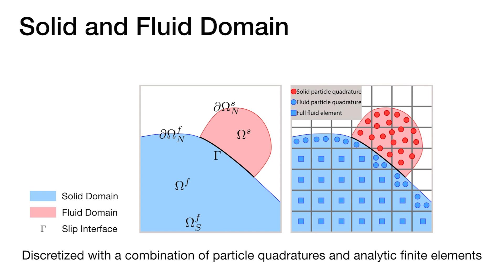Inspired by MPM weak form-based derivations, we discretize the entire coupling system using a combination of particle quadratures and analytic finite elements on a Cartesian background grid.